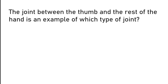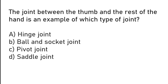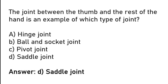The joint between the thumb and the wrist of the hand is an example of which type of joint? Hinge joint, ball and socket joint, pivot joint, or saddle joint. The correct answer is option D: the joint between the thumb and the wrist of the hand is an example of a saddle joint.